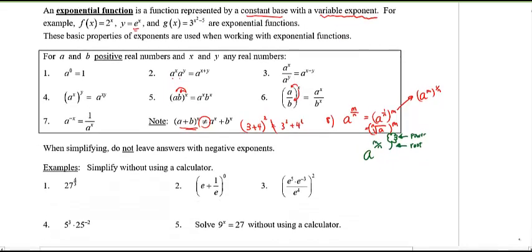Example 1: 27 to the power of four-thirds. The 3 represents the root, so this is the cube root of 27 raised to the power of 4. The cube root of 27 is 3, and 3 to the power of 4 is 81.